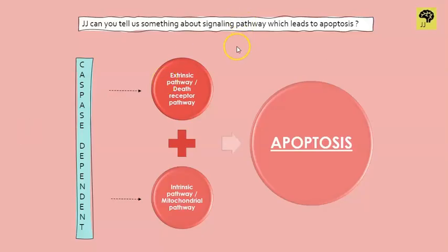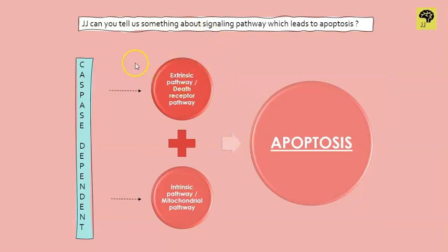There are two different pathways: the extrinsic pathway and the intrinsic pathway. The extrinsic pathway, as the name suggests, is for external signals such as growth hormones. The intrinsic pathway is for internal signals, such as when there is DNA damage, a damaged organelle, or low amounts of oxygen and nutrients.